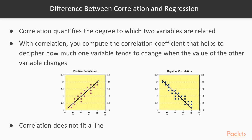Correlation does not fit a line — linear regression finds the best line that predicts y from x. The decision of which variable you call x and which you call y does not matter in correlation. However, it does matter in regression, as you get a different best-fit line if you swap the two. The line that best predicts y from x is not the same as the line that predicts x from y, but both lines will have the same value for R-squared.